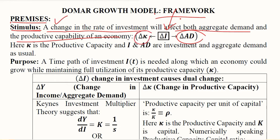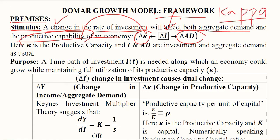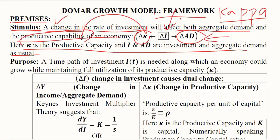The other side is the production side, or the supply side, which is represented by the productive capacity of the economy. Symbolically, it is represented by kappa (κ), which is the Greek equivalent of the English alphabet K. These are the various symbols used in this depiction of the dual effect of investment on any economy.